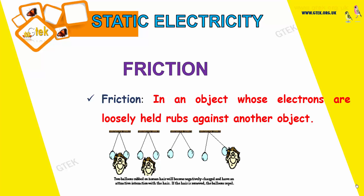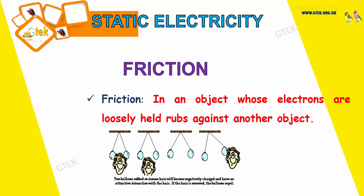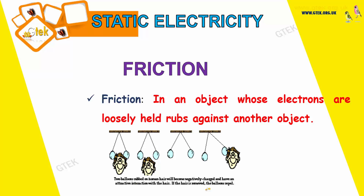You can see the example depiction of friction. Friction is nothing but an object whose electrons are loosely held rubs against another object. Here we have a consideration of two balloons rubbed on human hair — they will become negatively charged and have an attractive interaction with the hair. If the hair is removed, the bulbs fall. This is an example of friction.